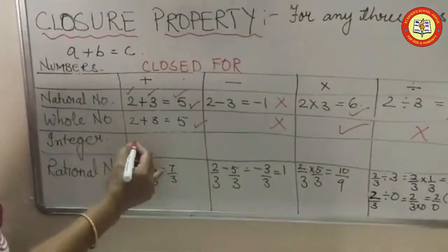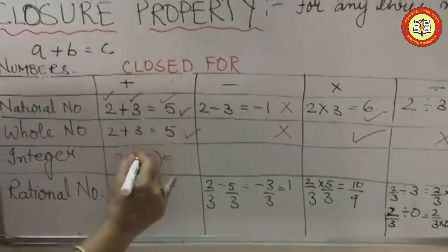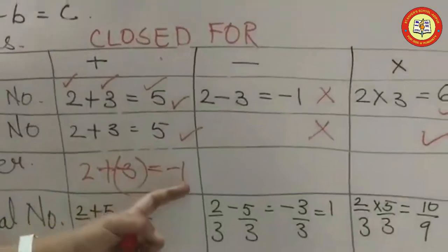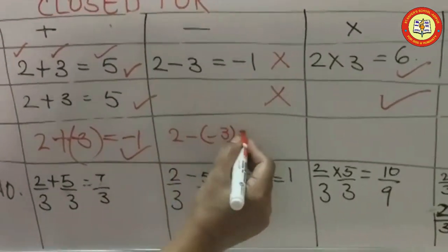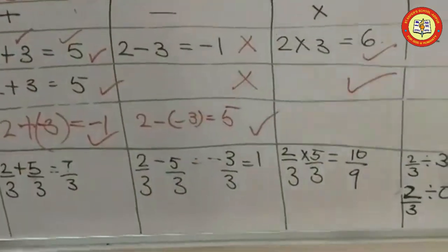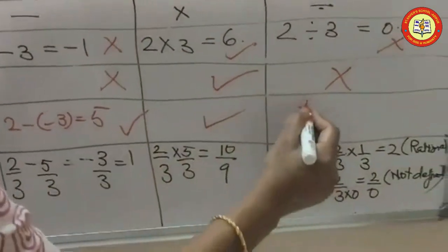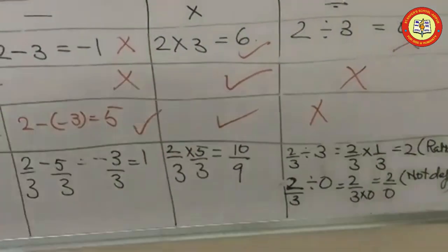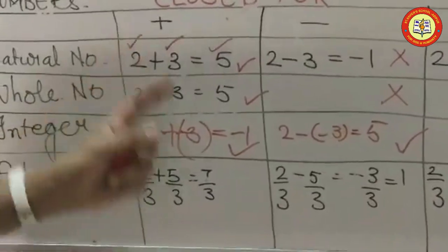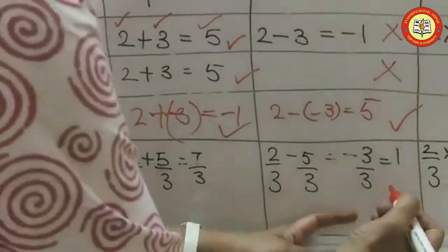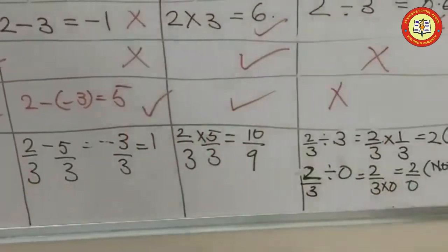For integers: 2 plus minus 3 equals minus 1, which is an integer, so it holds true for addition. 2 minus minus 3 equals 5, which is also an integer, so it holds for subtraction. It holds true for multiplication also, but it will not hold true for division. Similarly, for rational numbers: closure property is closed under addition, closed under subtraction, closed under multiplication, but not closed under division.